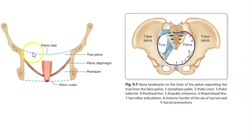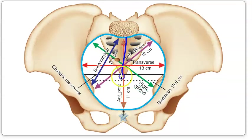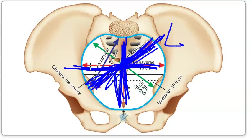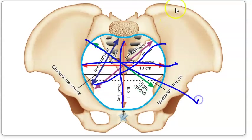In the pelvic inlet, there are diameters. The pelvic outlet and cavity also have many diameters. For the pelvic inlet, you have the anteroposterior diameter, the transverse diameter, and the oblique diameter — both left and right oblique. So in total, the inlet has anteroposterior, transverse, and two oblique diameters.